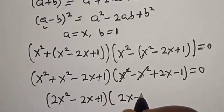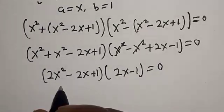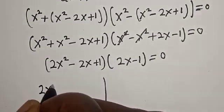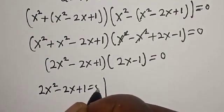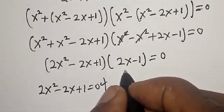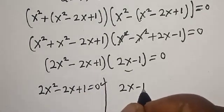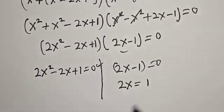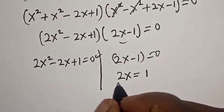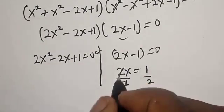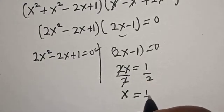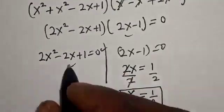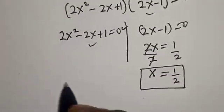Now there are two cases. Case 1: 2x minus 1 is equal to 0, so 2x equals 1. Dividing both sides by 2, x equals 1 over 2. So that is one of the values of x. Case 2: 2s-squared minus 2x plus 1 is equal to 0 — this is a quadratic equation. We solve this using the quadratic formula.